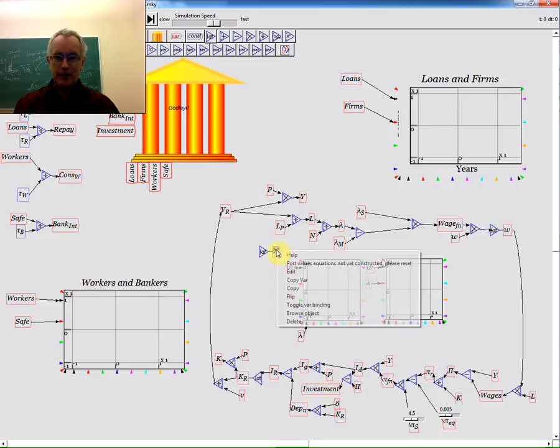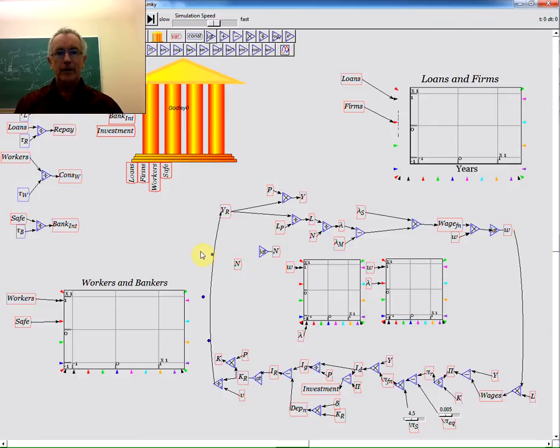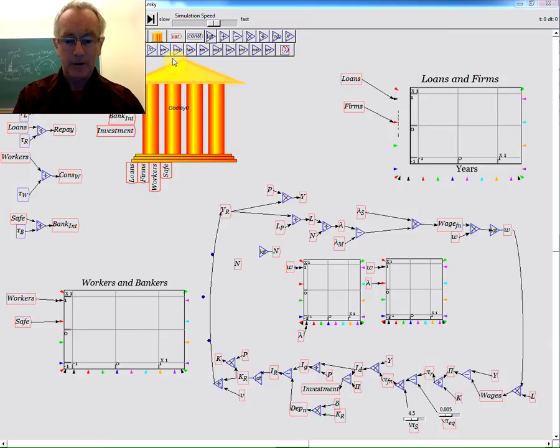And what I can do is then define population to be a growing system. So if I say pop underscore curly brackets GR, growth rate, and so the growth rate is 2% per annum.